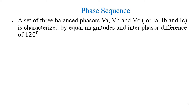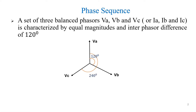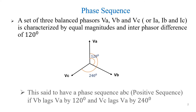Let us see with respect to the phasor diagram. Let us consider Va as the reference phasor. So we have taken Vb which is lagged behind Va by 120 degrees, and the phasor Vc is 120 degrees lagged behind Vb, or you can say 240 degrees lagged behind the reference phasor Va. This kind of phase sequence representation is generally called positive sequence.